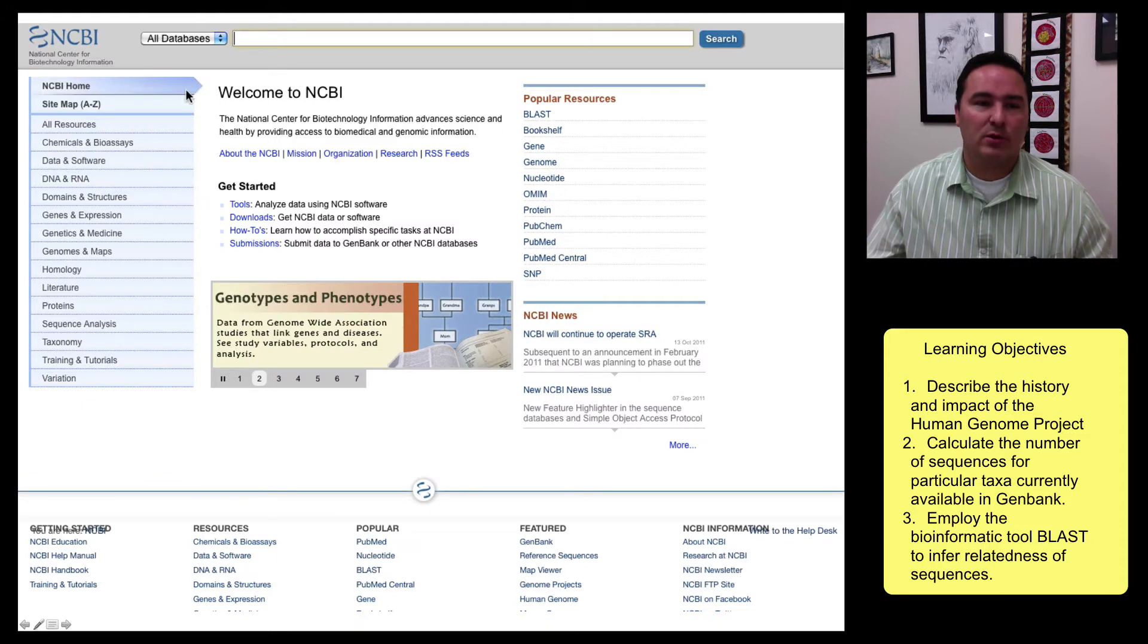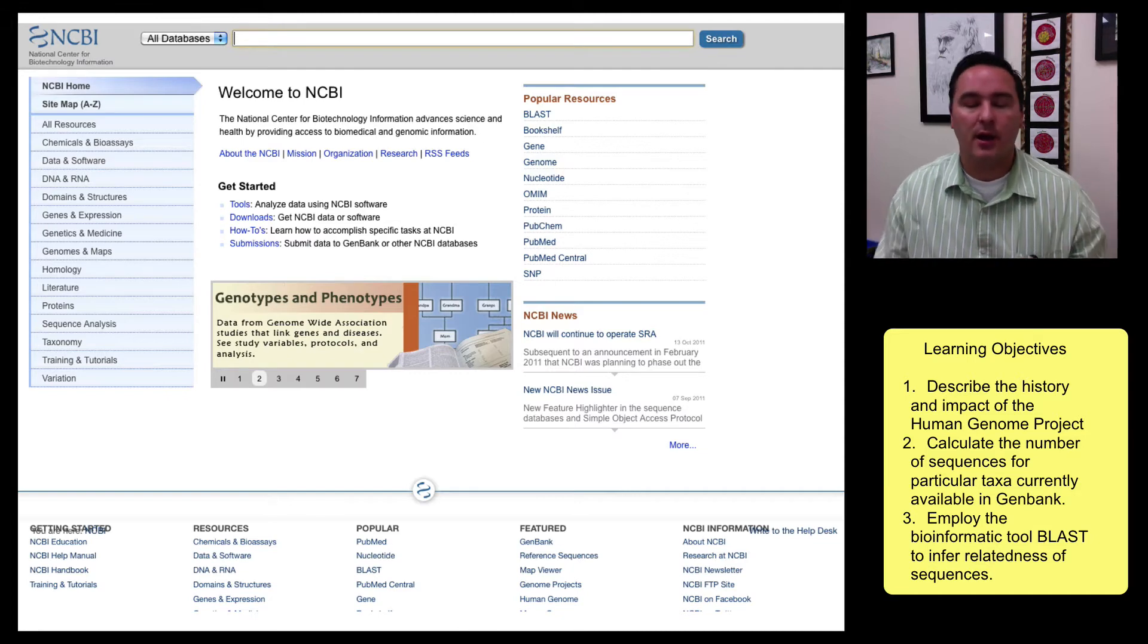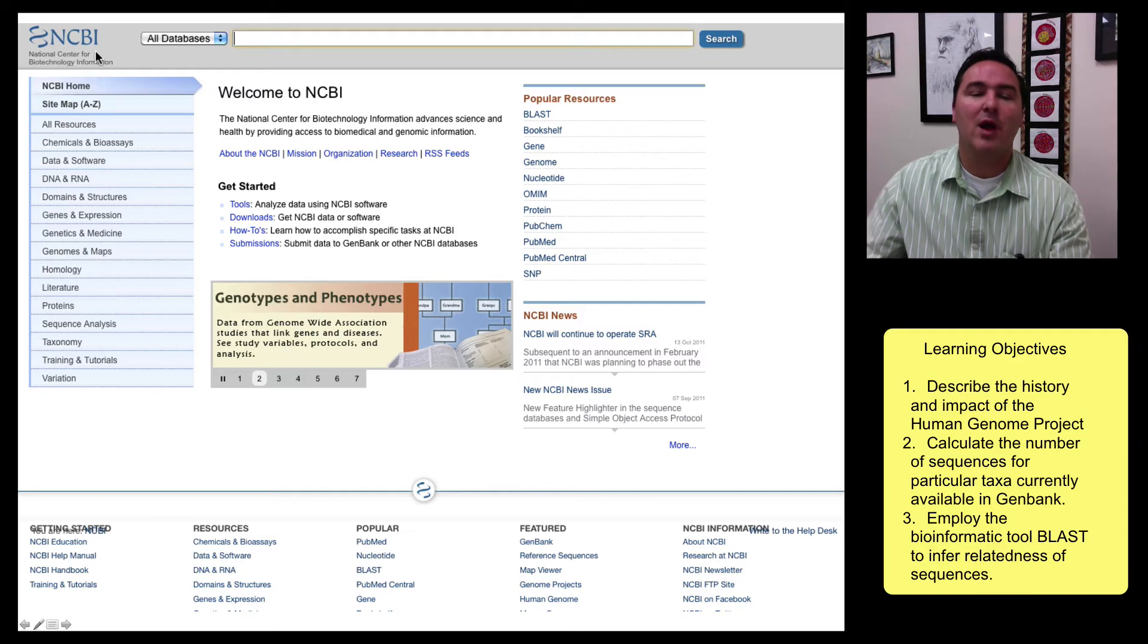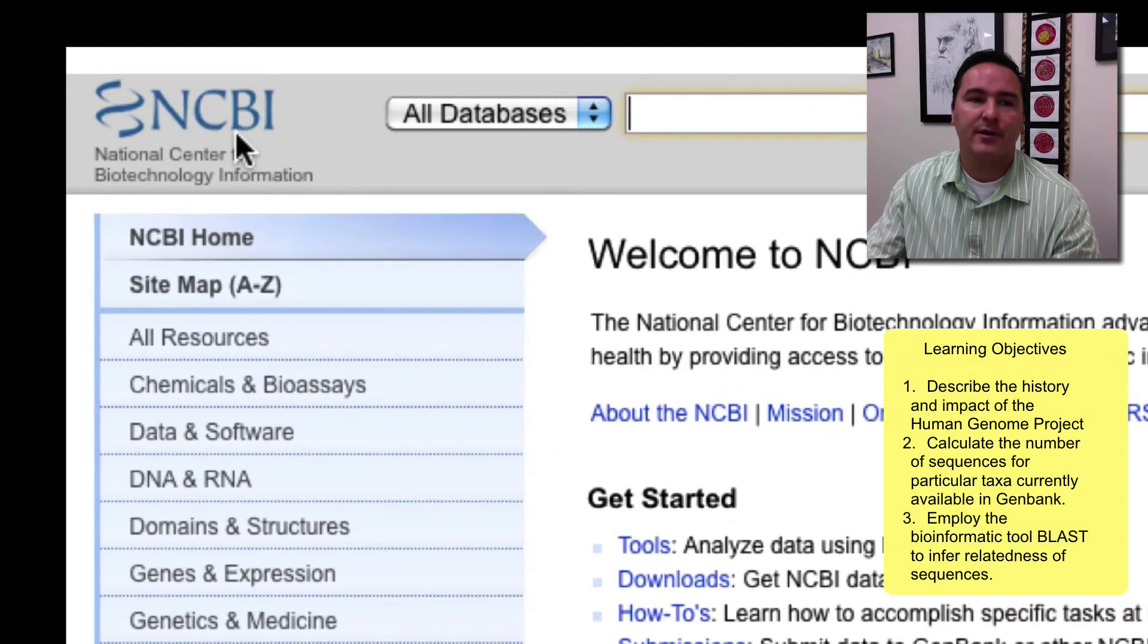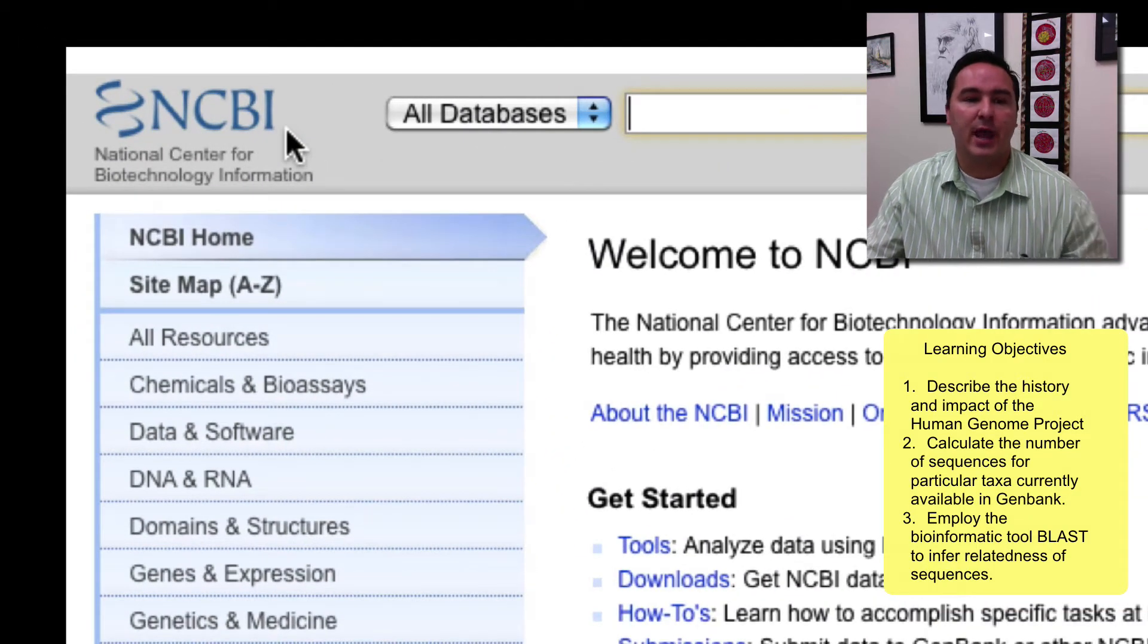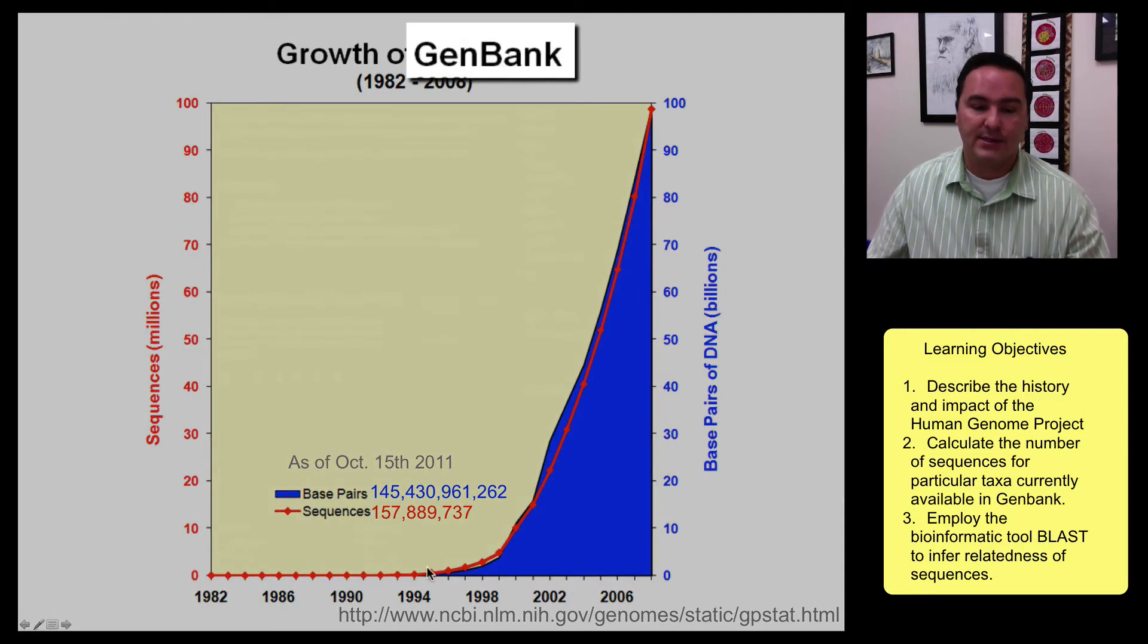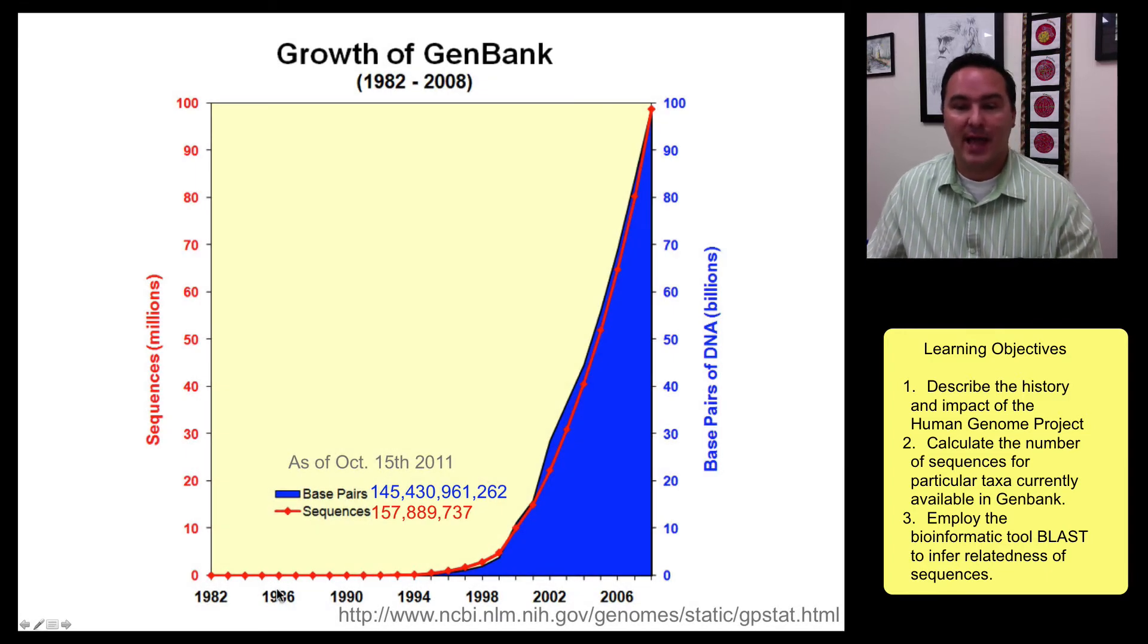The website that we'll go to in a little bit that stores all of this information and is integrating it all in conjunction with many other websites out there as well. There's hundreds and hundreds of different bioinformatic websites, but the main repository, this is called the primary database, is the National Center for Biotechnology Information, NCBI. Now, the growth of NCBI's database that stores all of this genetic information, which is called GenBank, has really been growing, especially in the last few years.